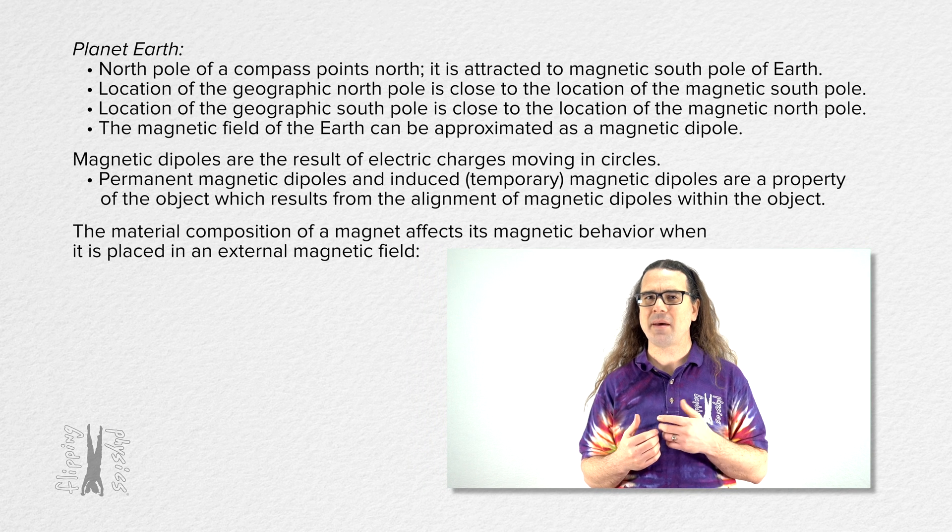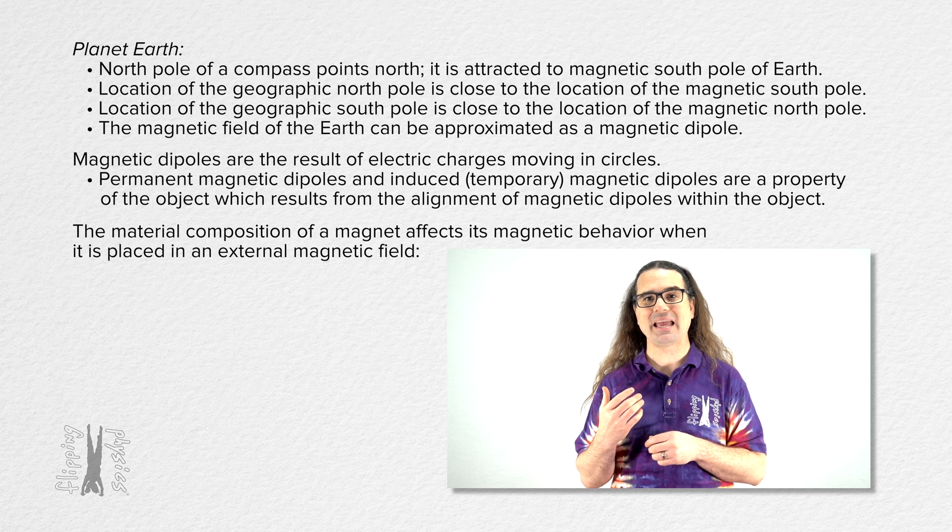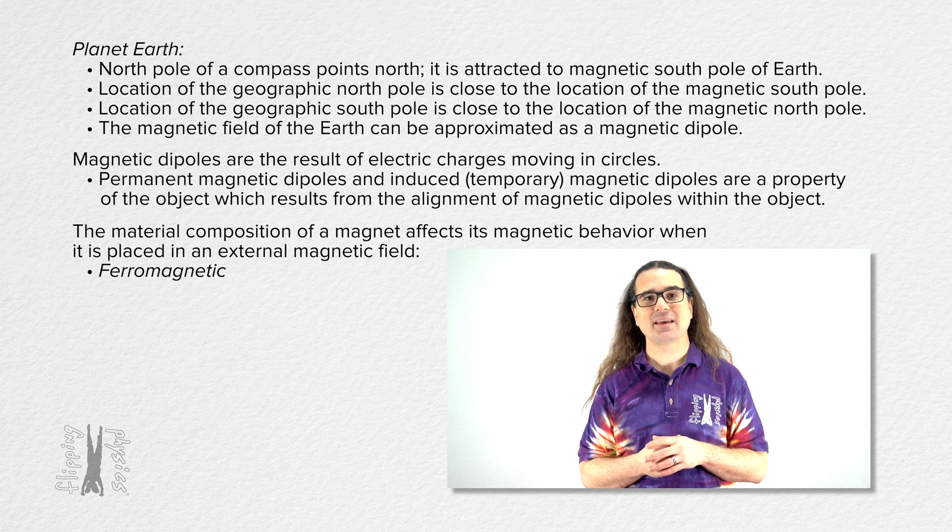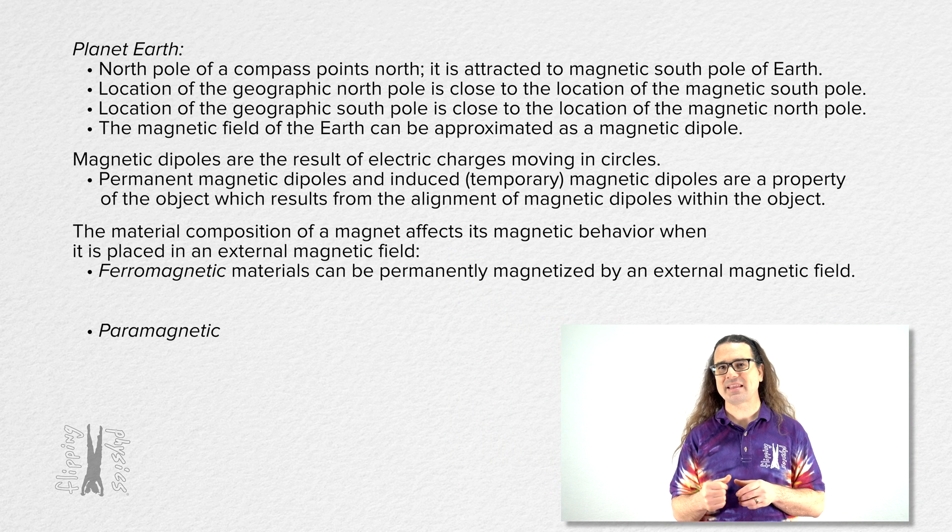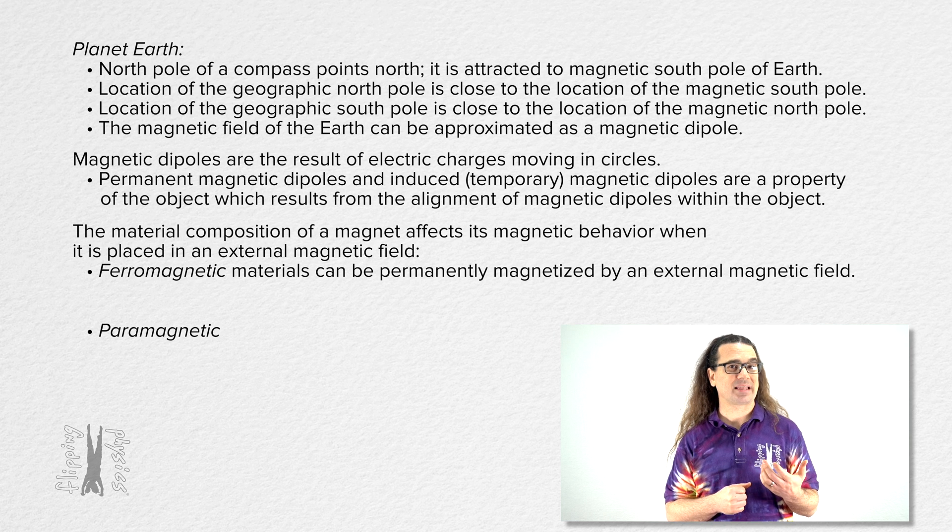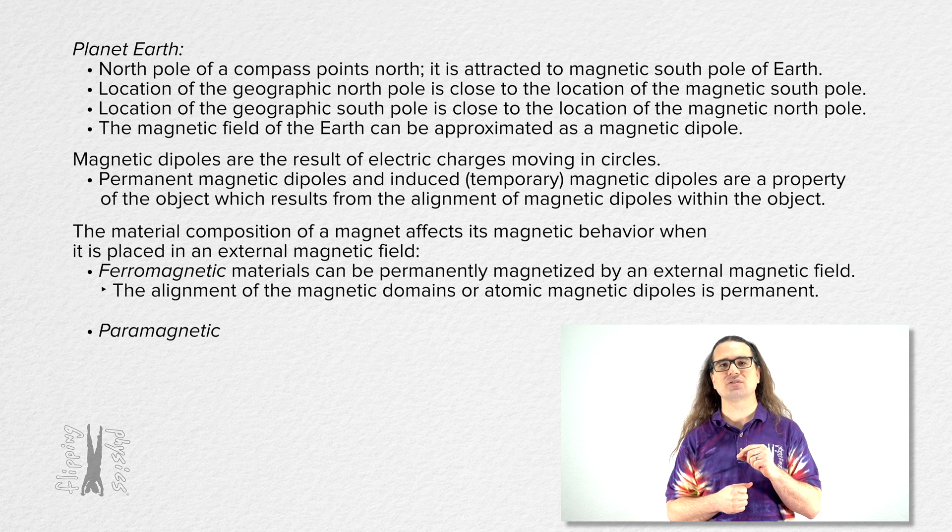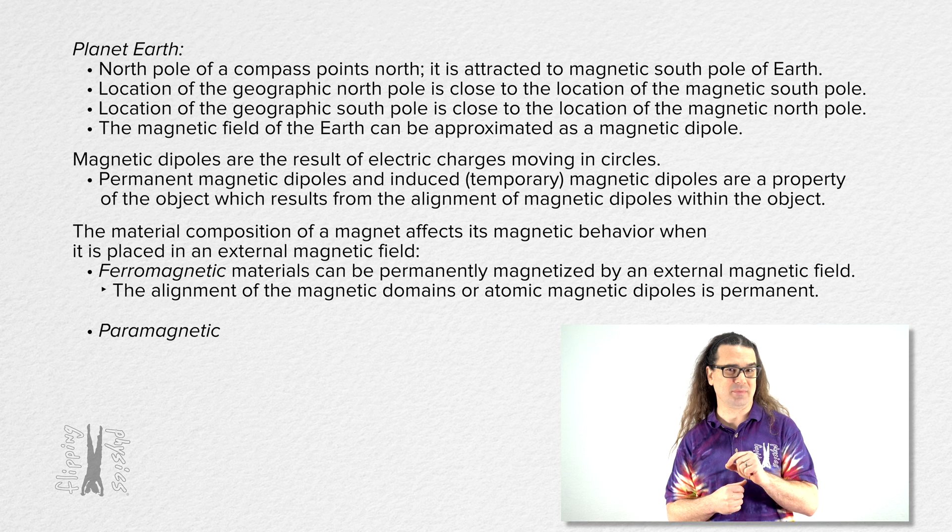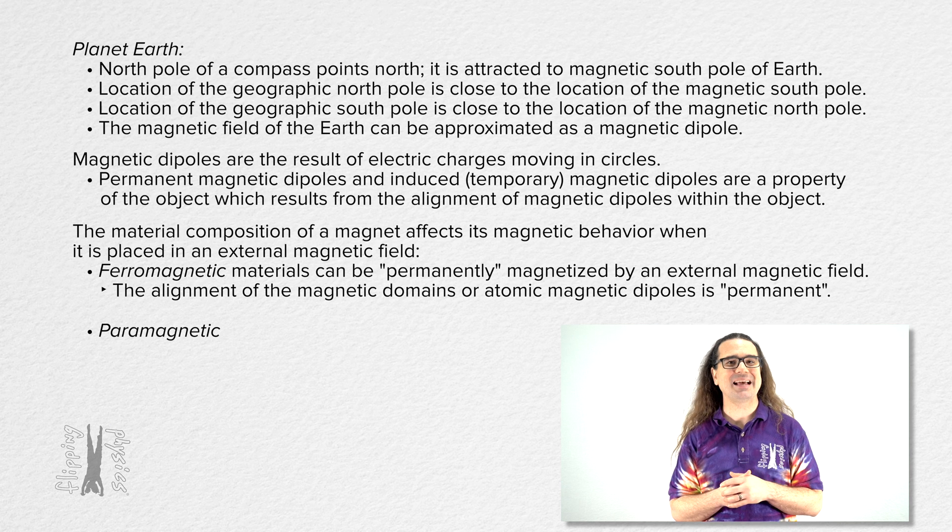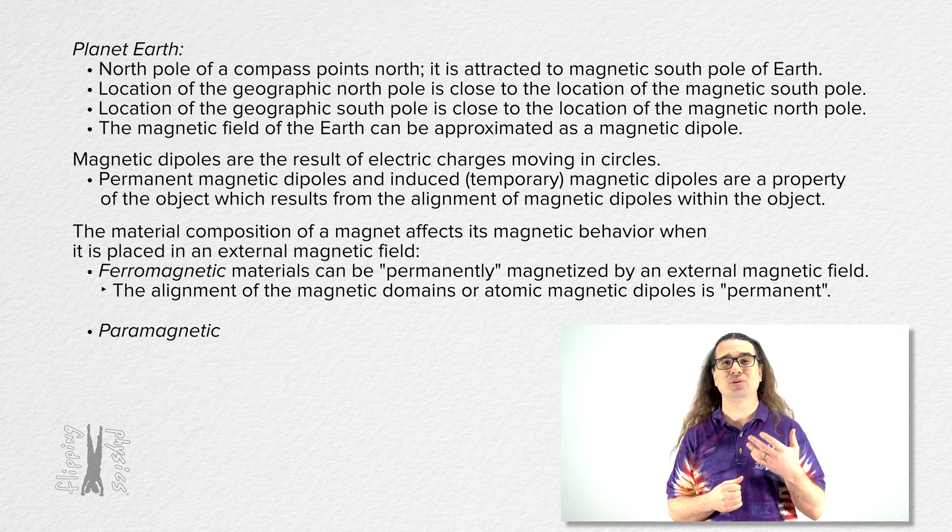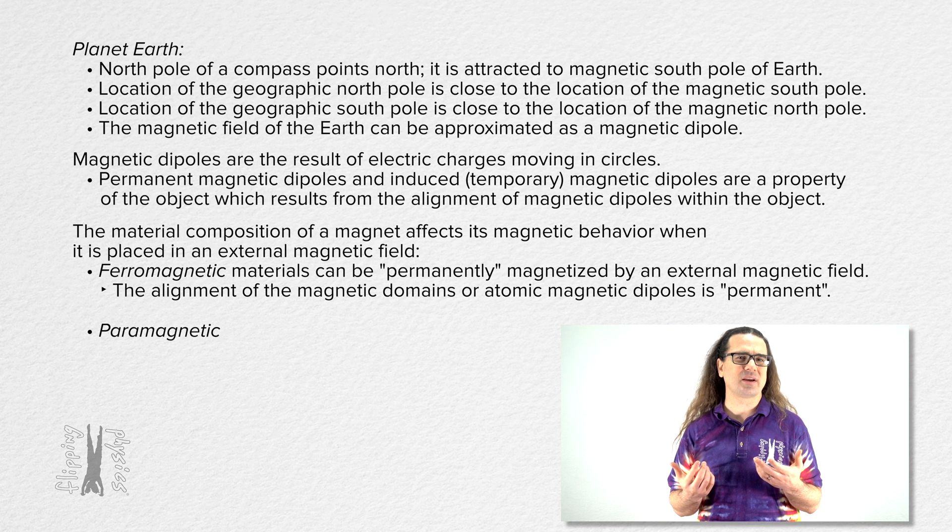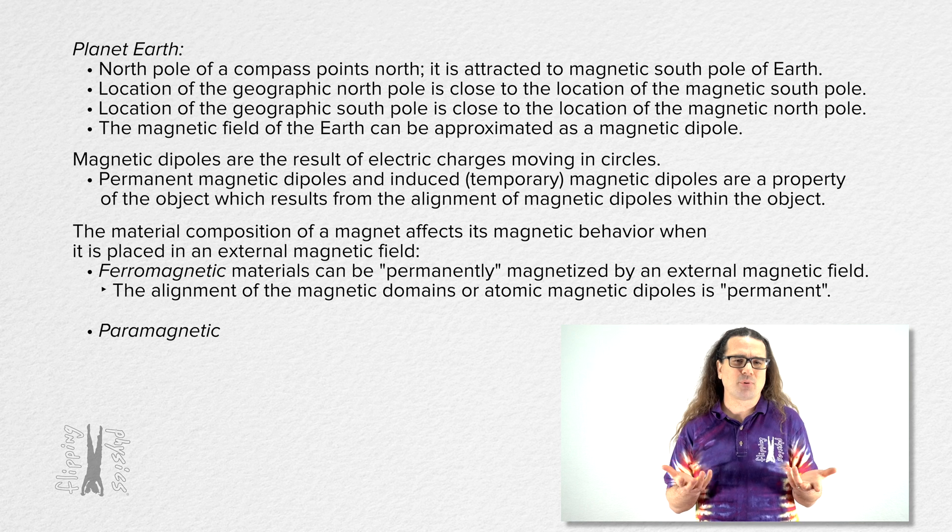The material composition of a magnet affects its magnetic behavior when it is placed in an external magnetic field and there are two basic types of magnetic materials, ferromagnetic and paramagnetic. Ferromagnetic materials can be permanently magnetized by an external magnetic field. The alignment of the magnetic domains or atomic magnetic dipoles is permanent. Actually, I'm going to put quotes around the word permanent in that statement. Permanent magnets actually do lose some of their magnetism over time. However, we are talking about losing roughly 1% of their strength over the course of a century. So, pretty close to permanent.